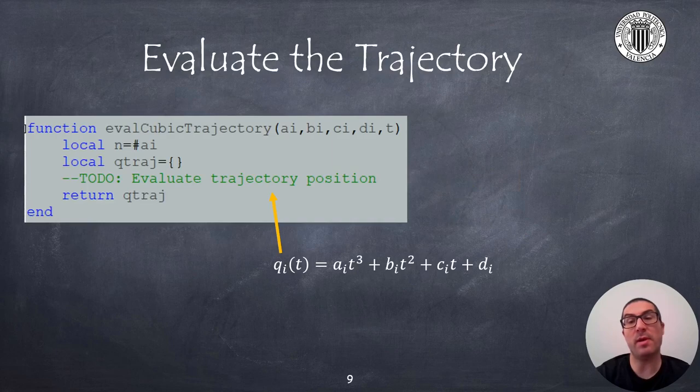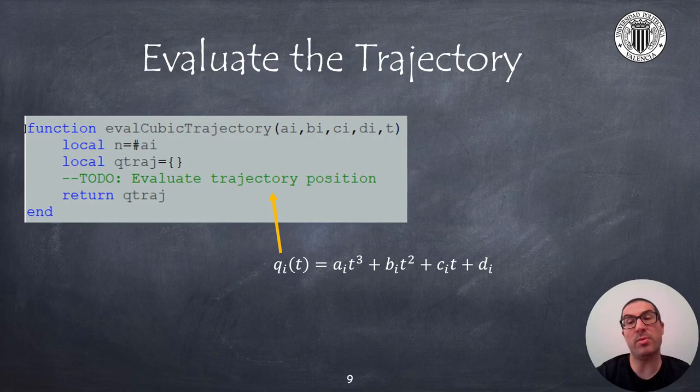Now you must also implement a function named evalCubicTrajectory. This function accepts the trajectory parameter vectors we created before as well as the time in variable T and provides as output the position of the joints in the vector variable qTraj. Please fill the elements of the qTraj variable with the cubic expression as indicated.